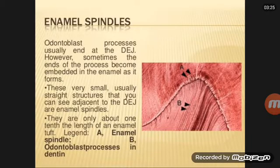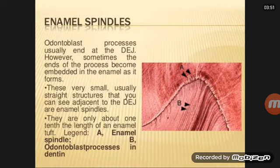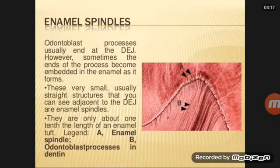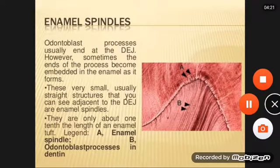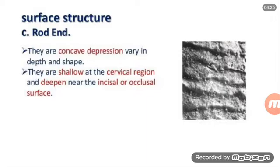Enamel spindles: odontoblast processes usually aimed at the DEJ. Enamel spindles are odontoblastic processes that pass across the DEJ and extend into enamel. They are thickened at their ends because of extension of odontoblast processes between stratum intermedium and stellate reticulum before enamel formation. They are perpendicular to the DEJ, and the direction of spindle and rods are divergent.